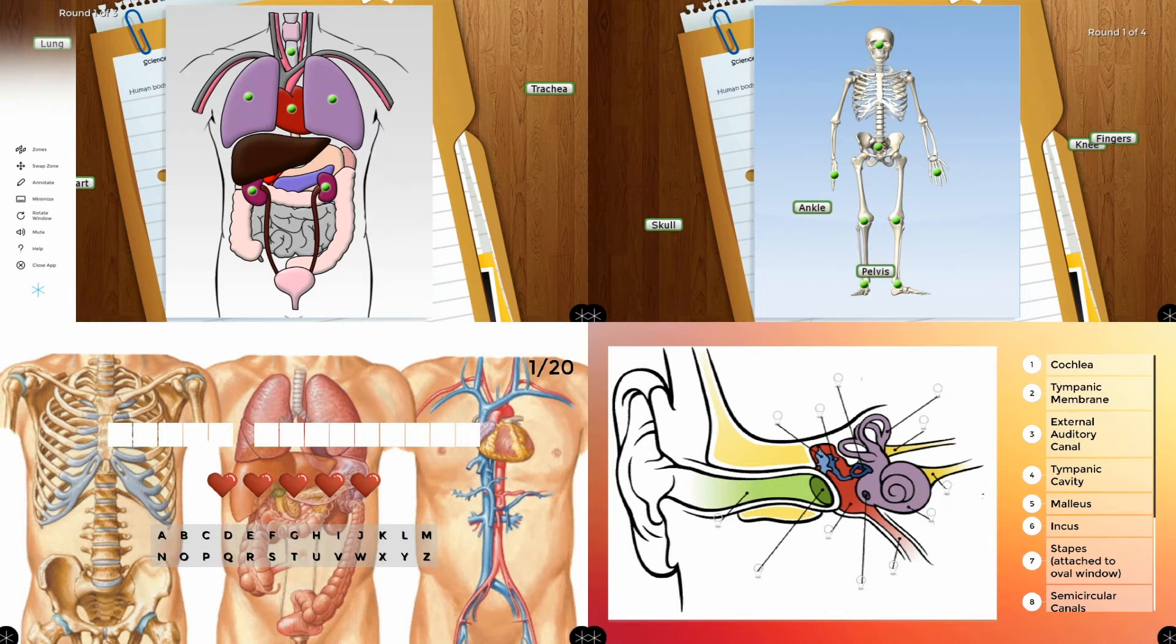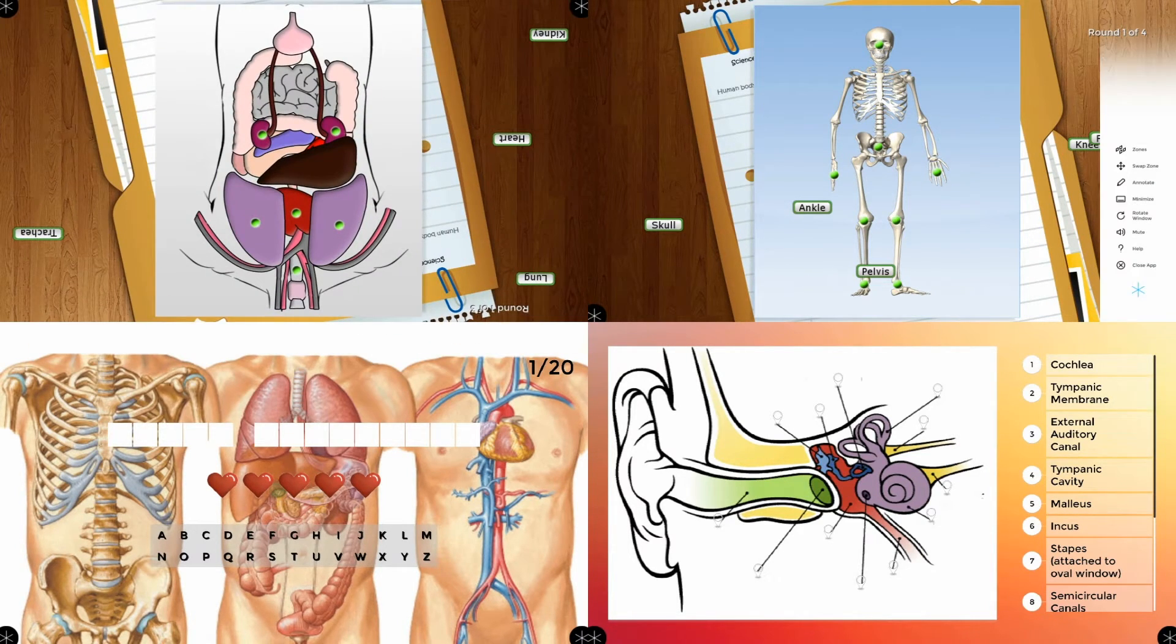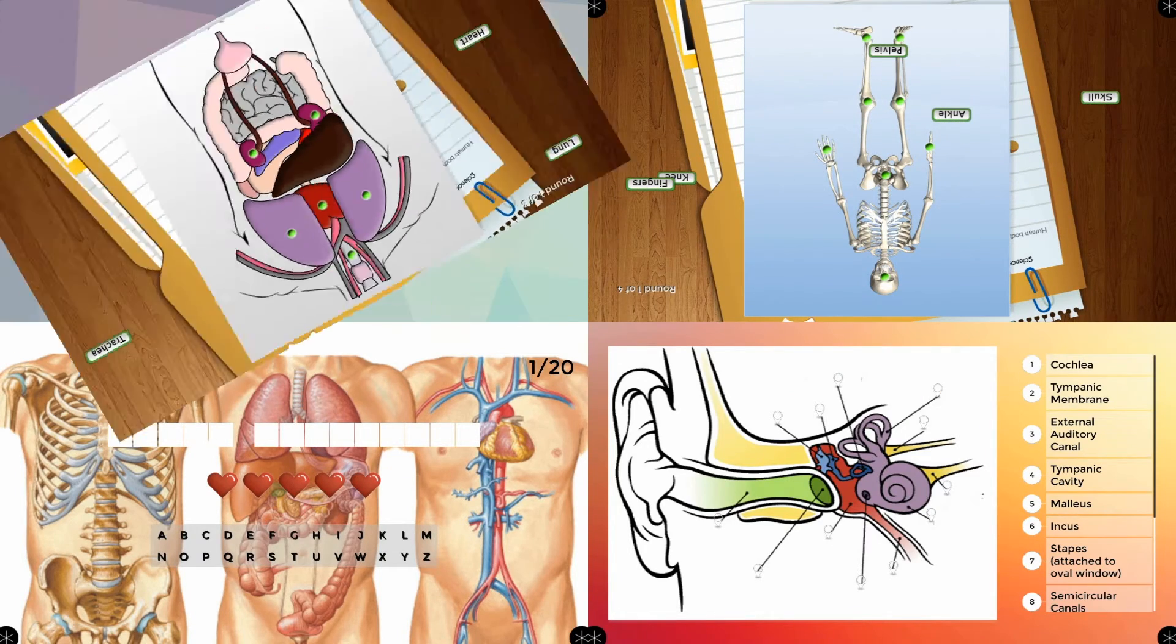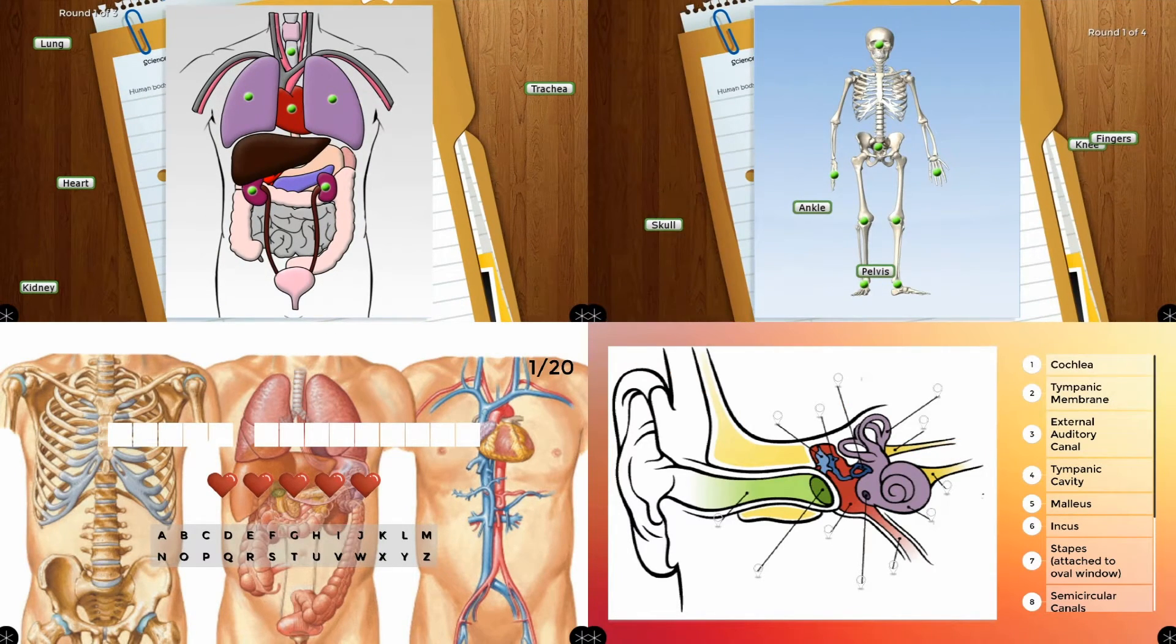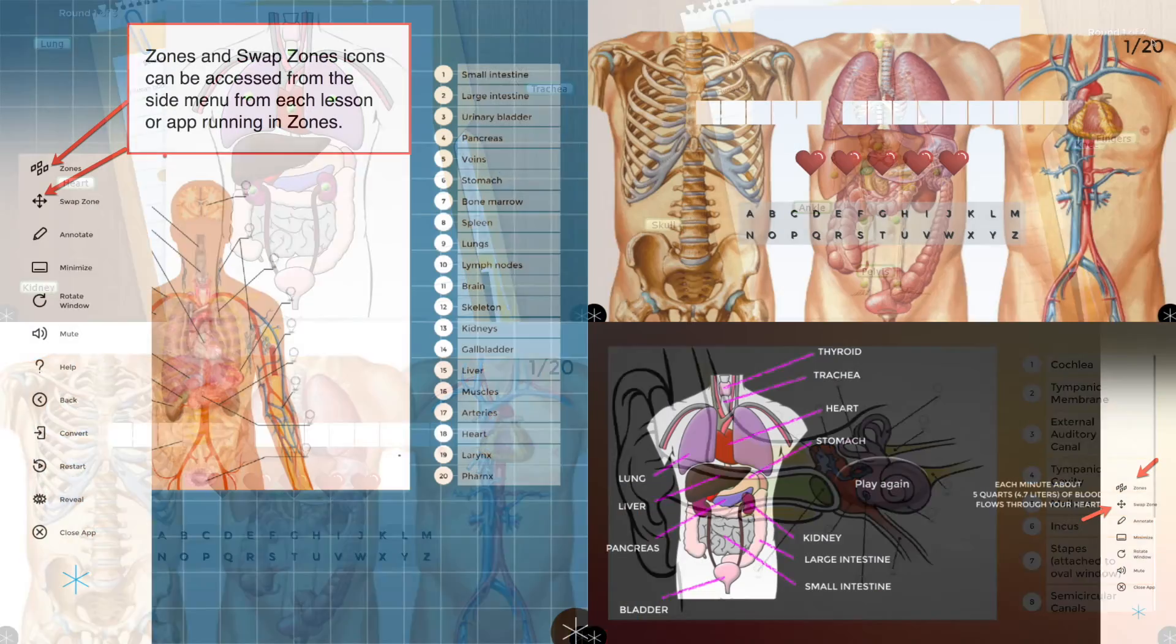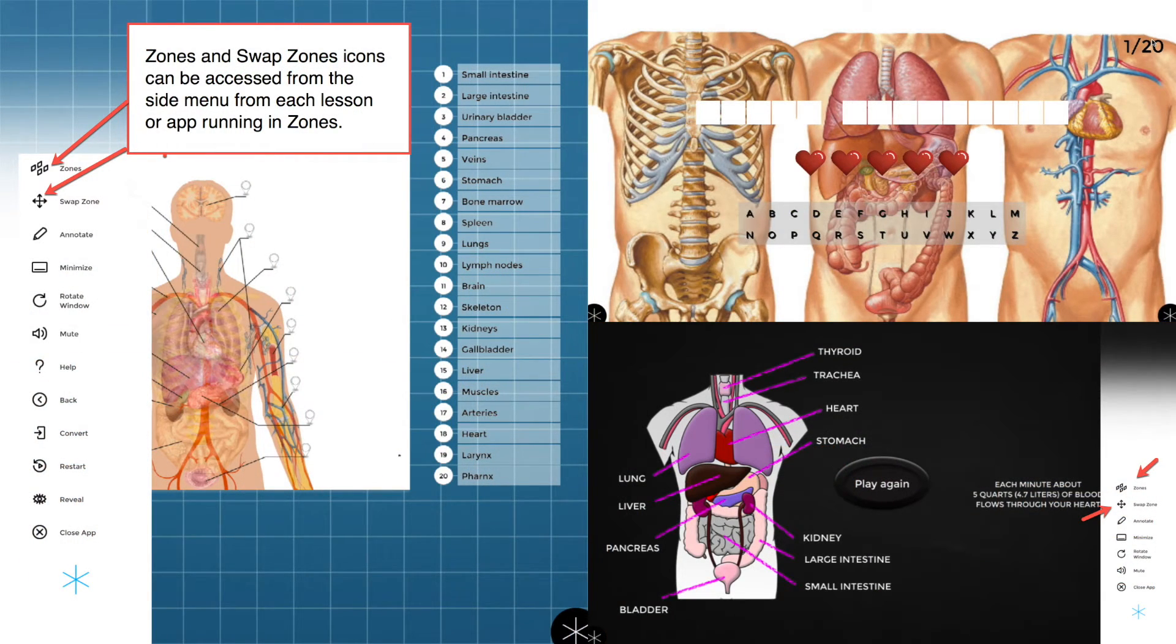You can use the Rotate button for the upper two zones to quickly orient them for use on a tabletop display and then rotate them back. You can use the Zones button within one zone to put the lesson or app in full screen mode. For reference, here is a chart showing the side menu items that can be accessed while in Zones.